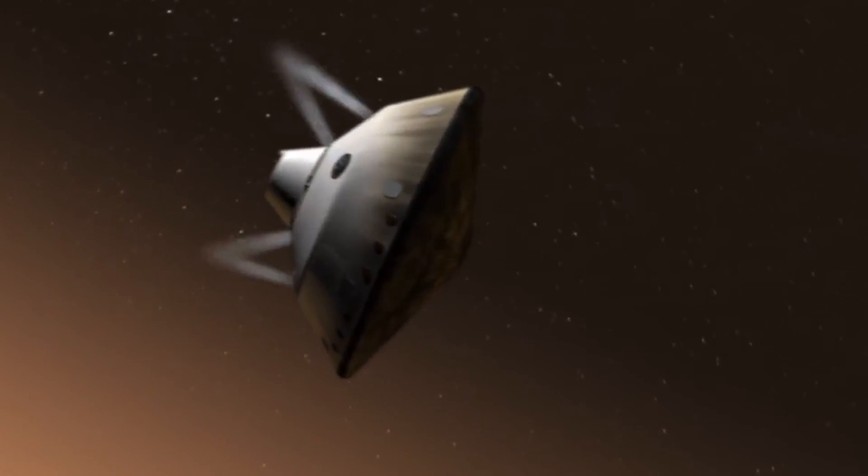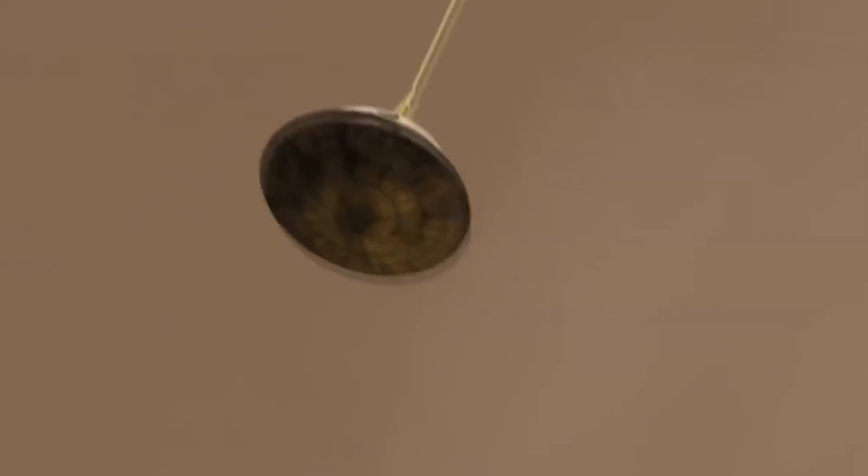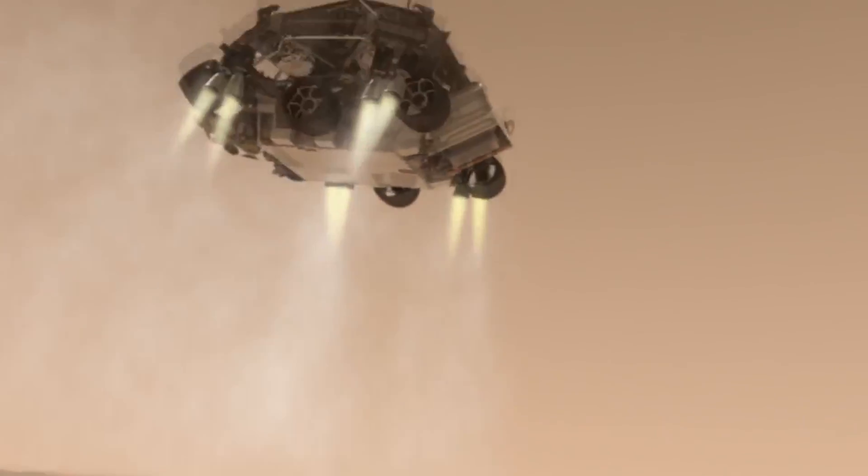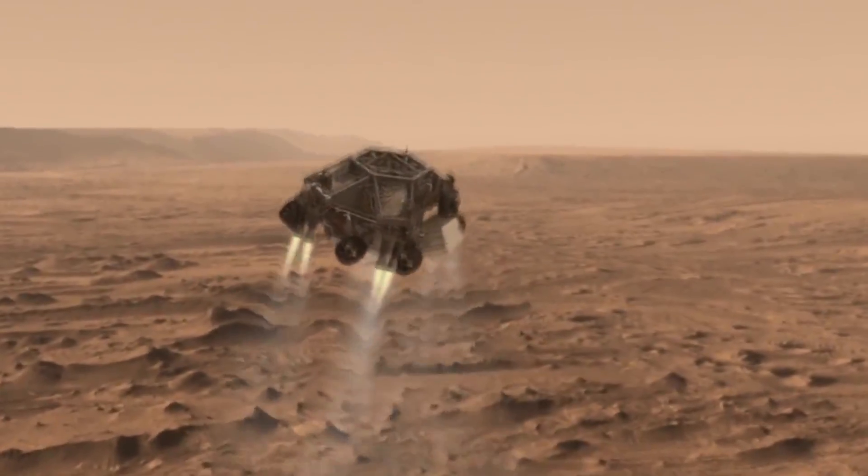There had to be a supersonic parachute that deployed, which was able to slow it down even further, but not to the point that it could land safely. After it got to about the critical speed, it detached the parachute and retro rockets burned on what was called a sky crane.